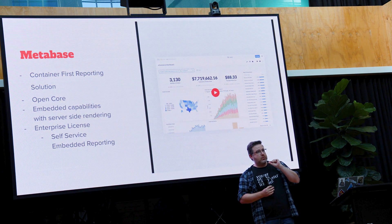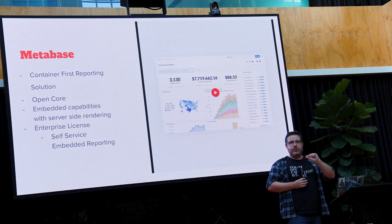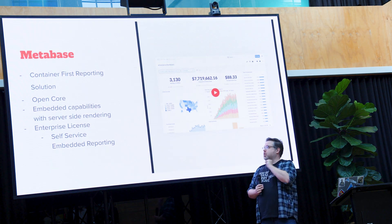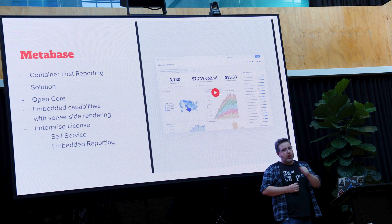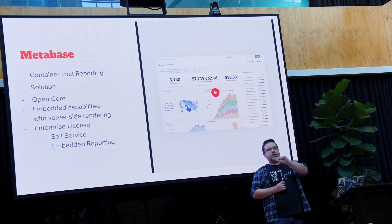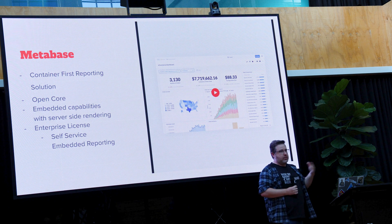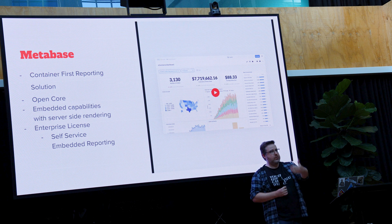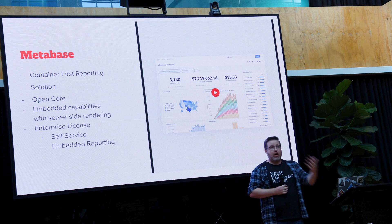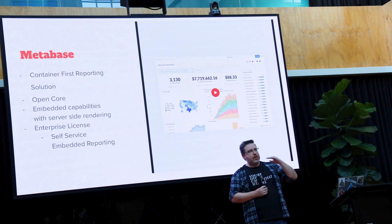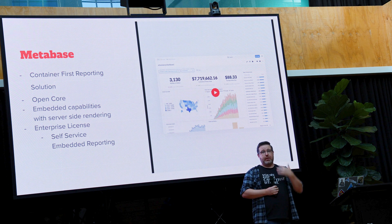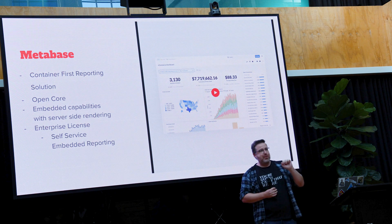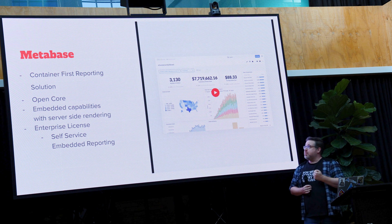Metabase has two other really interesting capabilities. One is it supports server-side rendering, which is really important to hide where the thing is coming from when rendering through a web page. The other interesting thing, which is behind the Enterprise License that I'm hoping to try soon, is it offers self-service interactive analytics. I can essentially fire up a Cube inside Metabase and render that out into the app. That would give you, as a customer, the power to build your own tables and reports — and that's a really interesting feature.